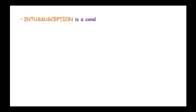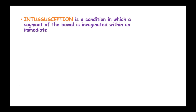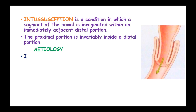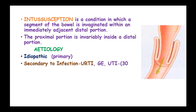Intussusception is a condition in which a segment of the bowel is invaginated within an immediately adjacent distal portion. The proximal portion is invariably inside the distal portion. The causes of intussusception are idiopathic in primary cases, and secondary to infection such as upper respiratory tract infection, gastroenteritis, and urinary tract infection.